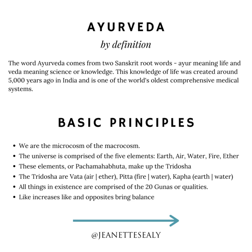You may have taken your dosha quiz already on Banyan Botanicals. If not, make sure to go over to the course beginnings and get your dosha figured out. The next belief in Ayurveda is that all things in existence are comprised of the 20 gunas, or 10 opposite pairs of qualities. And the foundational concept, which is really important, is that like increases like, and opposites bring balance.